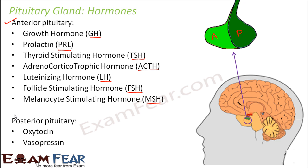Since the posterior pituitary is directly connected to the hypothalamus, the hormones oxytocin and vasopressin are basically produced by the hypothalamus. It is just that since the axon terminals of the hypothalamic neurons are located in the posterior pituitary, these hormones get secreted there. But in the real sense, they are produced by the hypothalamus. Now we will look at the functions of each of these hormones in the human body.